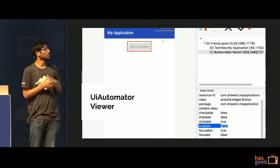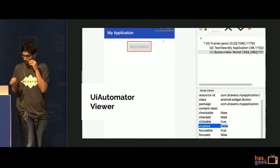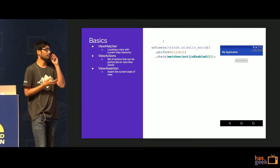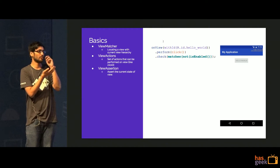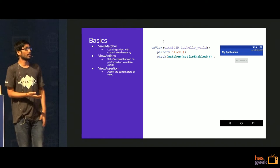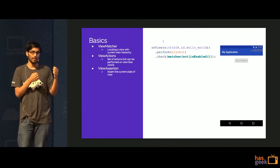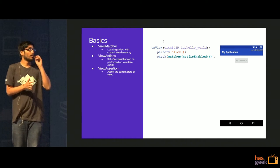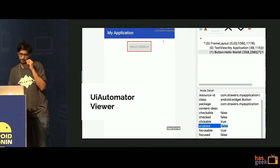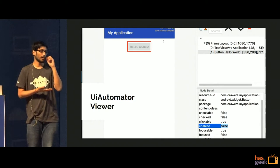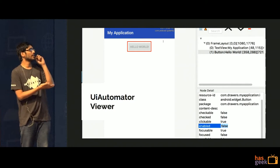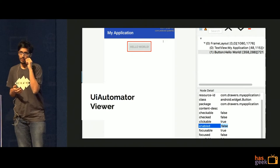One really handy tool is UI Automator. With the fluent API there can be a catch — what if the button is not visible, or not clickable? For example, instead of disabling the button we make it unclickable, and both look similar on the UI. A tool available in the Android SDK tools folder called automator viewer lets you go and check the state of different views.